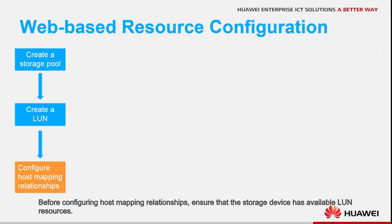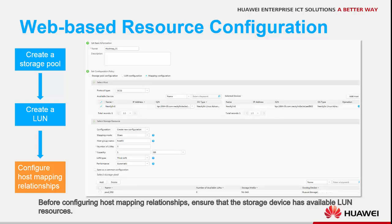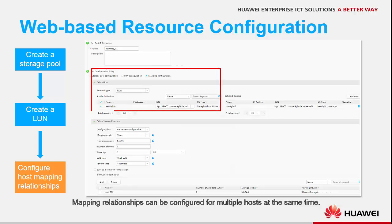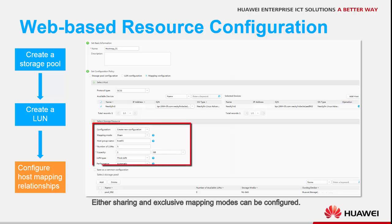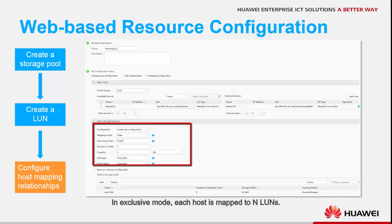Before configuring host mapping relationships, ensure that the storage device has available LUN resources. Mapping relationships can be configured for multiple hosts at the same time. You can add a host manually. Either sharing or exclusive mapping modes can be configured. In sharing mode, all hosts are mapped to N LUNs. In exclusive mode, each host is mapped to N LUNs.